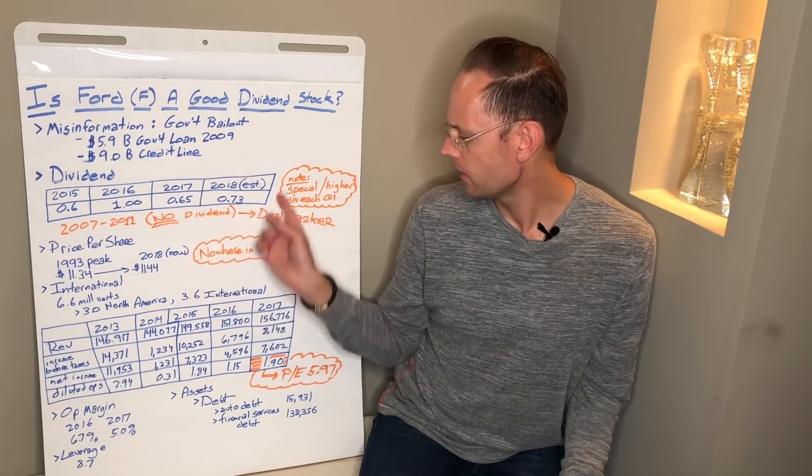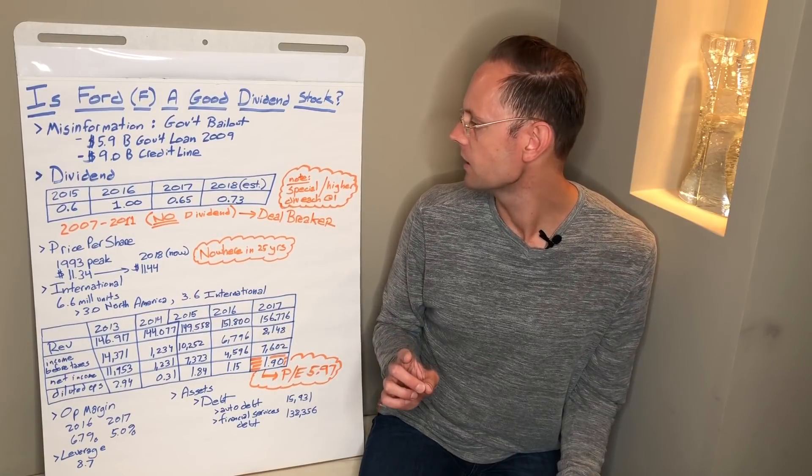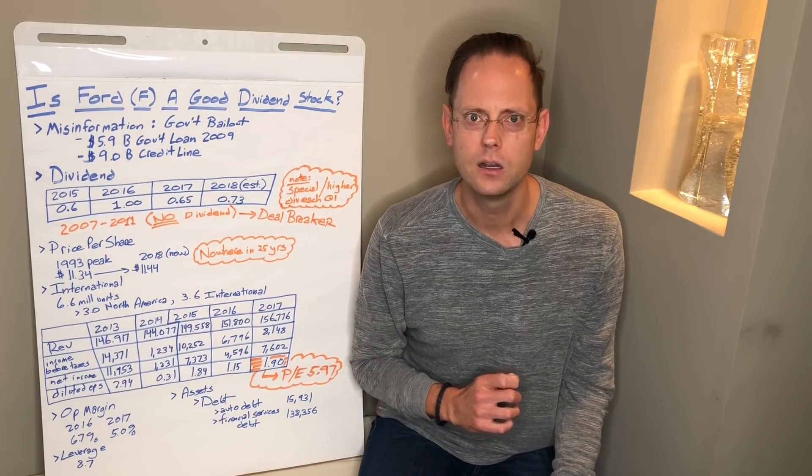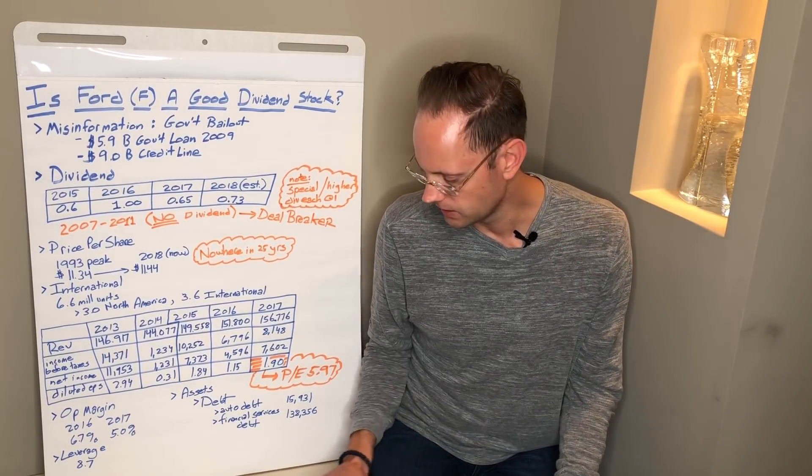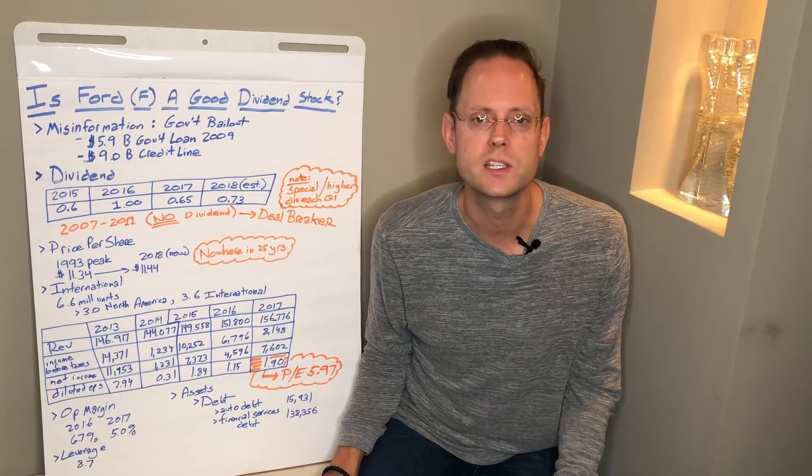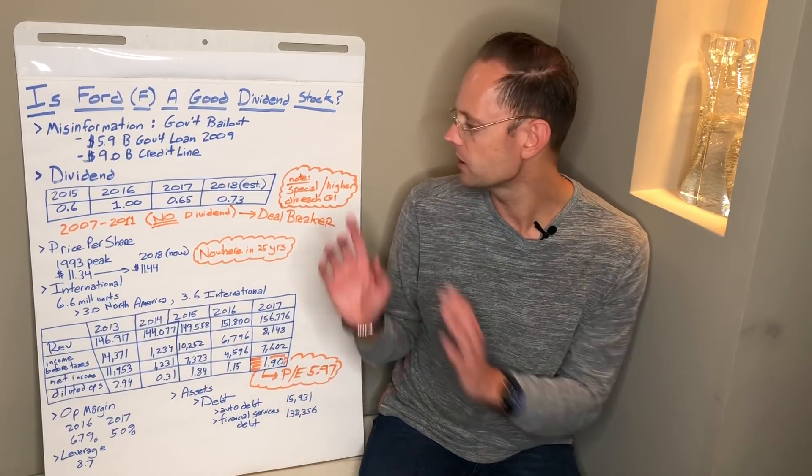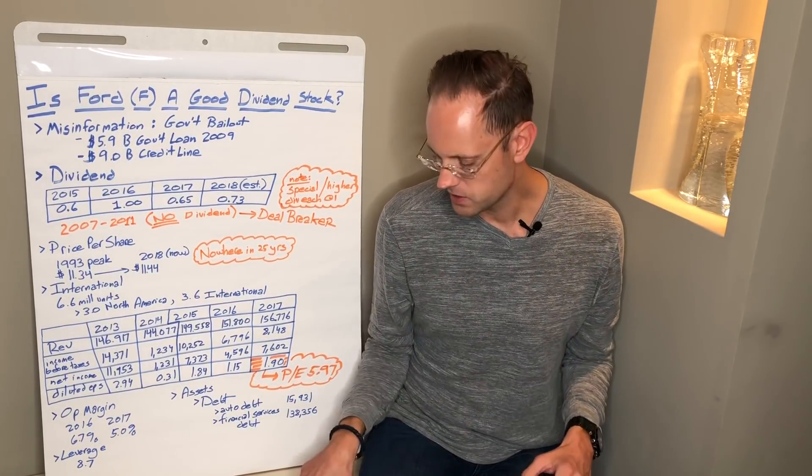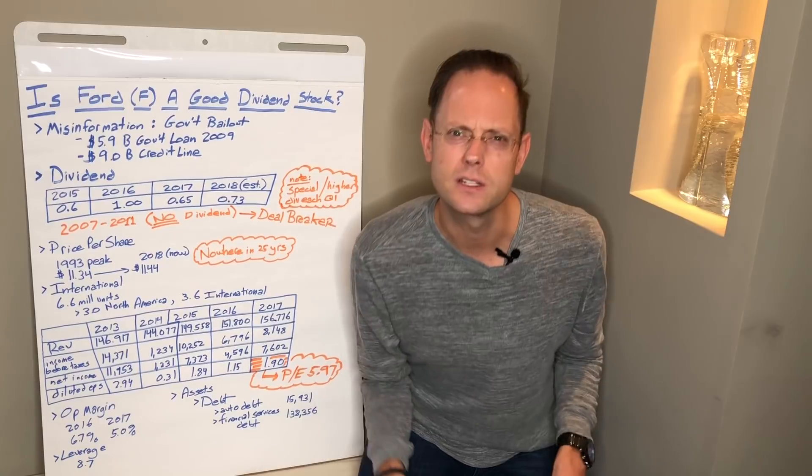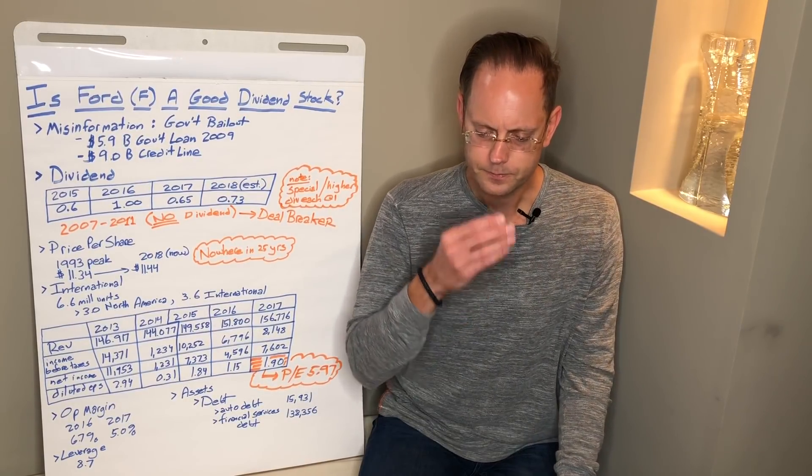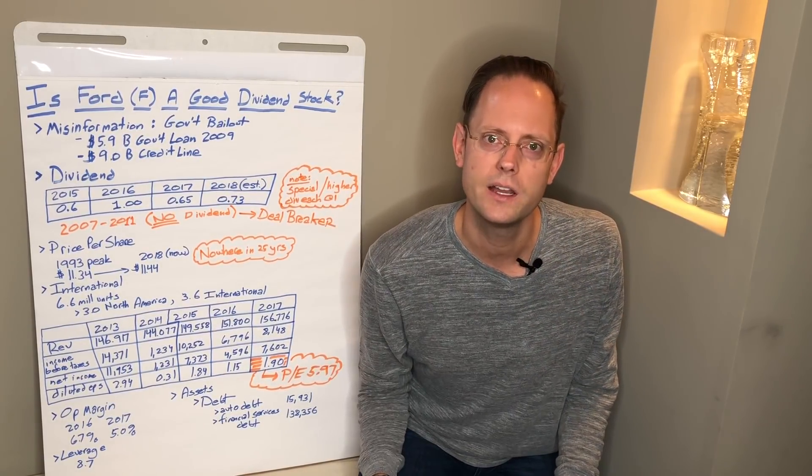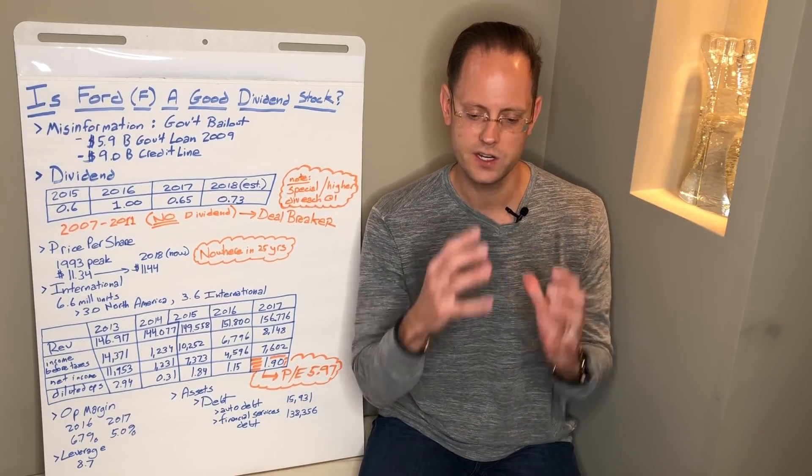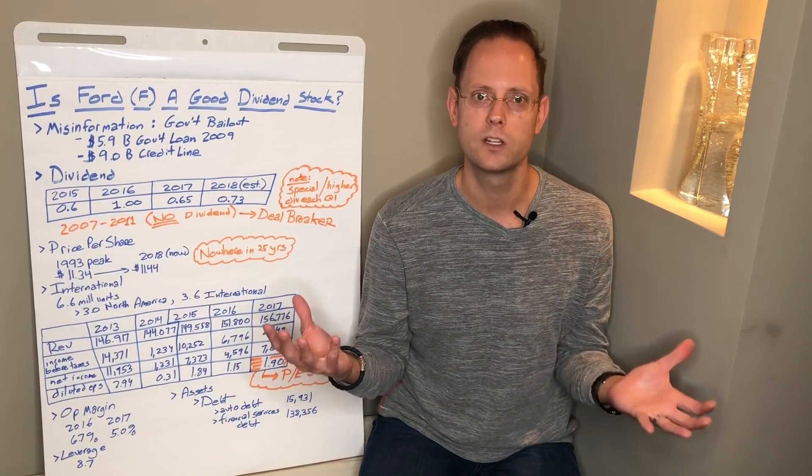The dividend yield right now actually is quite substantial. We're yielding estimated about 73 cents per share this year in 2018. The current share price is $11.43. When you take 73 cents, you divide by the $11.43. You get a current yield of about 6.4%. That is fabulous. That is a great dividend yield.